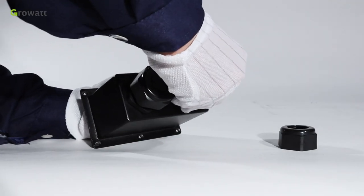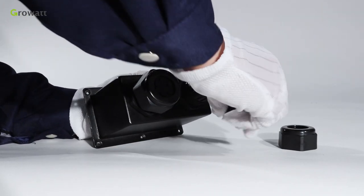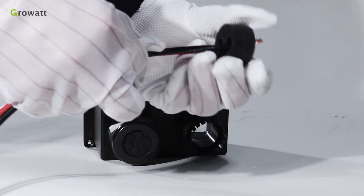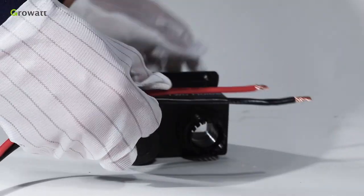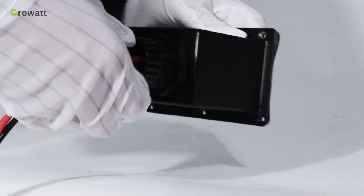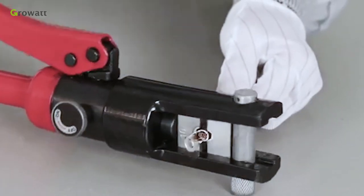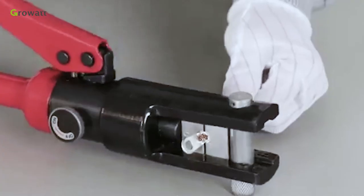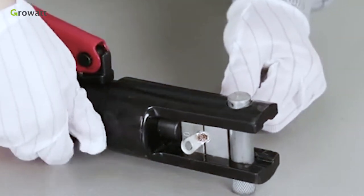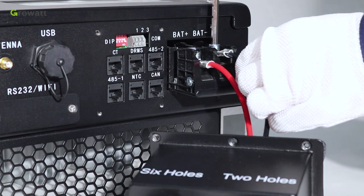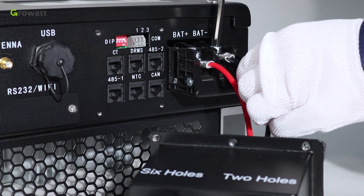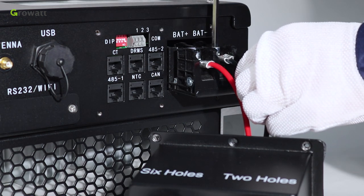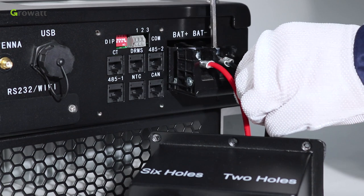Dismantle the waterproof cover, thread cables through a pressure screw, seal ring, threaded sleeve, waterproof cover. Thread cables into connection terminal, then press the terminal by relevant tools until the battery cables are firmly connected. Finally, connect positive and negative pole of battery cable to the respective battery terminal of SPH.